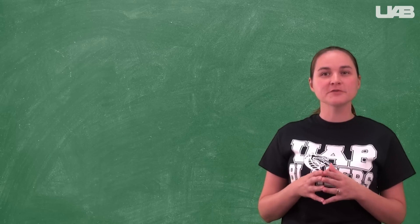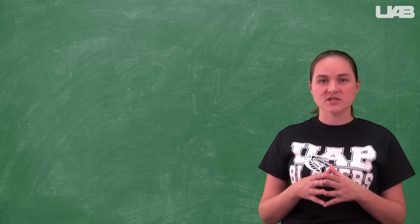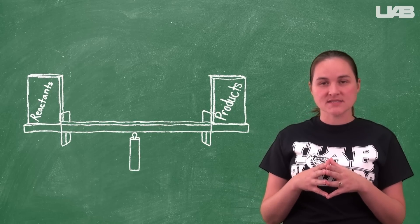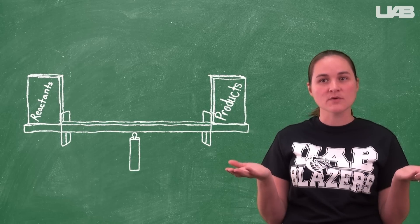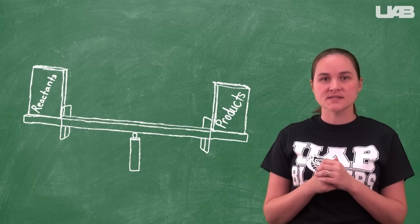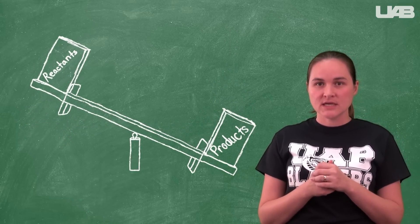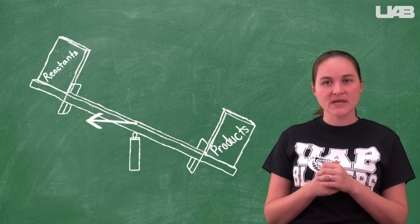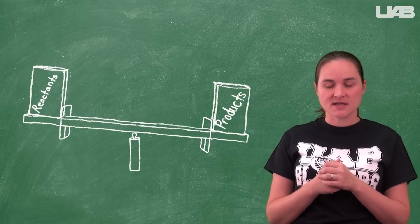Sometimes it is helpful to think of Le Chatelier's Principle in terms of a seesaw. At equilibrium, the products and the reactants have found a balance, so the seesaw runs parallel to the ground. If we add products to the right side, then the seesaw becomes unbalanced. To reach this balance again, we will have to convert some product to reactant, and then our seesaw can straighten back out.